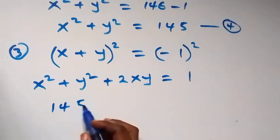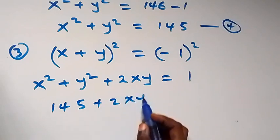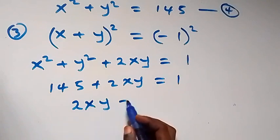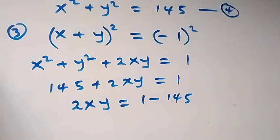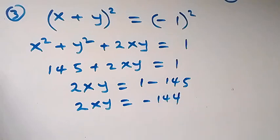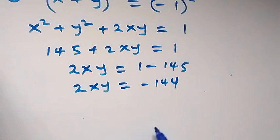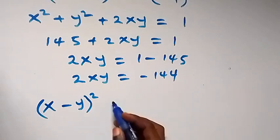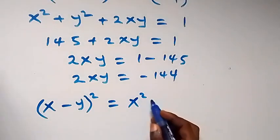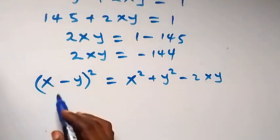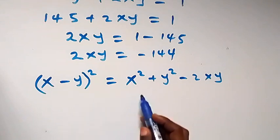So we have 145 plus 2xy equals 1, which gives us 2xy equals 1 minus 145, implying 2xy equals minus 144. Now, recalling that (x minus y) squared expands to x squared plus y squared minus 2xy, we set up this expression to find x minus y.